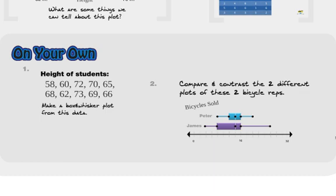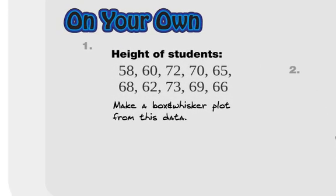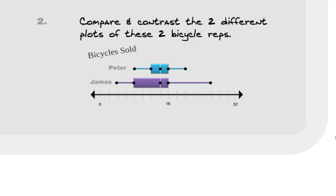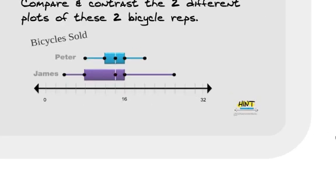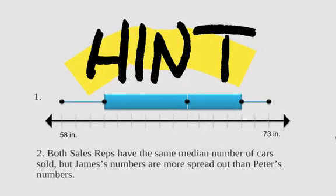All right. So we've got heights of students here on the left. I want you to make a box and whisker plot of that. Remember, put the items in order. And what about number two? I want you to compare and contrast the two different plots of these two different bicycle reps. What are they saying? What does it mean? They both have the same median, right? But who sold more? All right. So make a box and whisker plot of here. Find the median. First quartile, third quartile, lowest, maximum. And then definitely check it out here. See which one who sold the least amount, maybe in a day or per week.